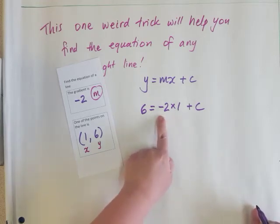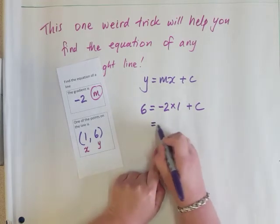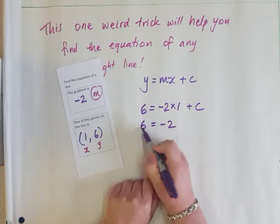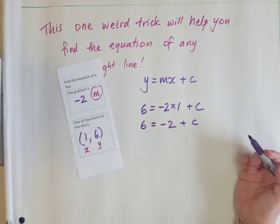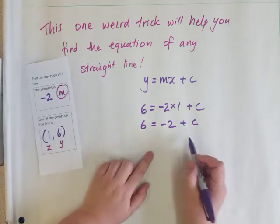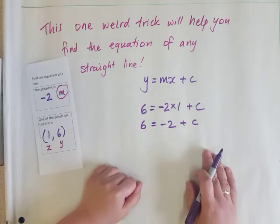Let's work this out. -2 times 1, well that's -2. So -2 plus how much is going to be 6? That's going to be 8, so the letter c must be 8.